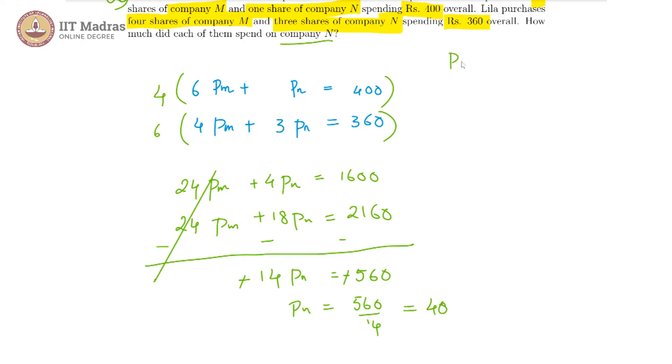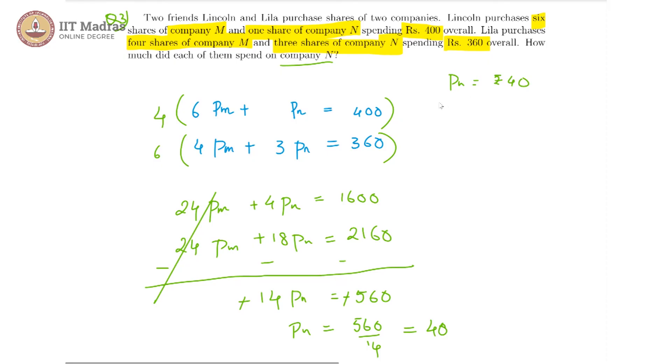So PN is 40 rupees per share, and now since Lincoln has purchased only one share, Lincoln spent only 40 rupees on company N. Whereas, Leela spent 3 times that which is rupees 120.